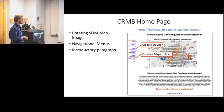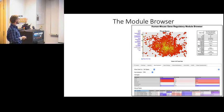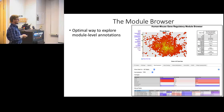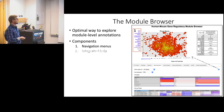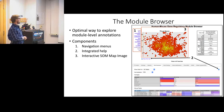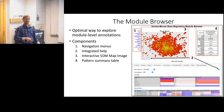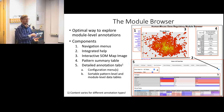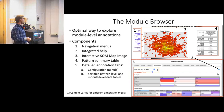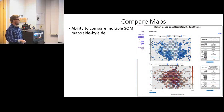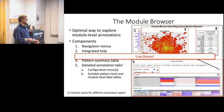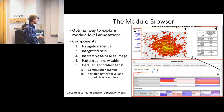The module browser is the optimal way to explore module-level annotations. It has five main components: navigation menus, integrated help links, an interactive SOM map image, a pattern summary table, and detailed annotation tabs. Each tab has configuration menus and sortable tables showing pattern-level or module-level data. Rather than describe these further, let me switch over to a live browser demonstration.